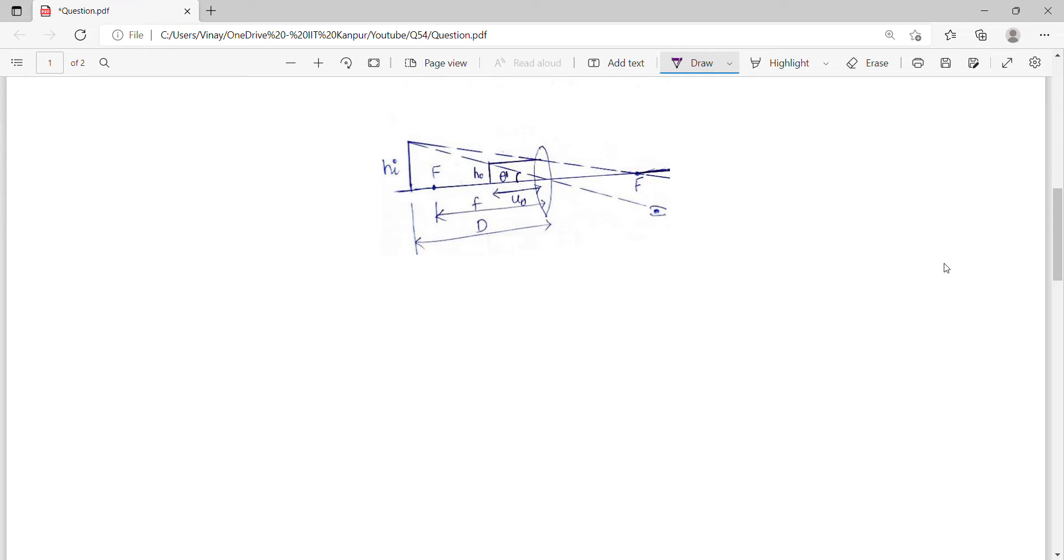Let's make the ray diagram. If this is the object, one ray goes towards the optical center like this. Another goes parallel and then through the focus. These rays are diverging; they are not going to meet at all. If you extend them backward, they will form the image somewhere here. Using congruent triangles, take this triangle.